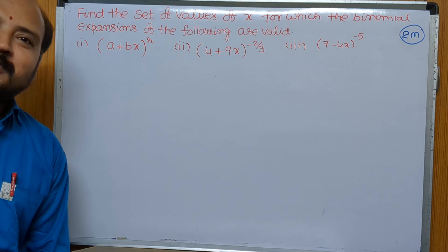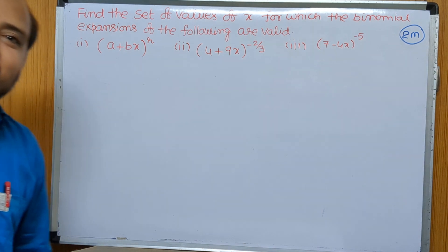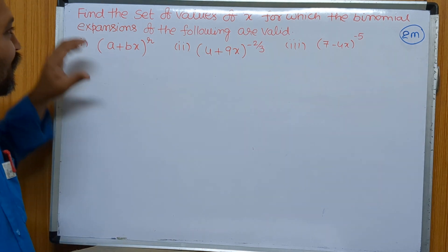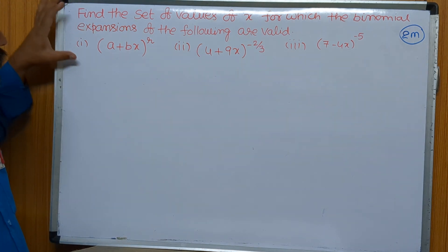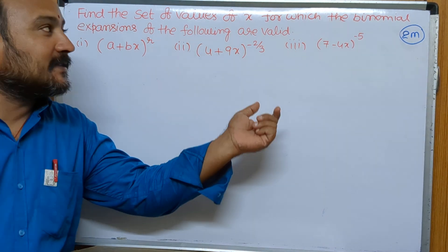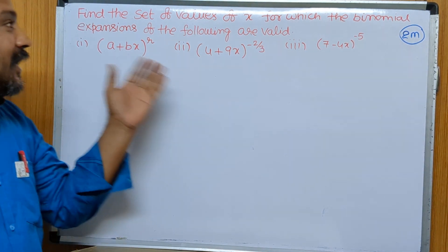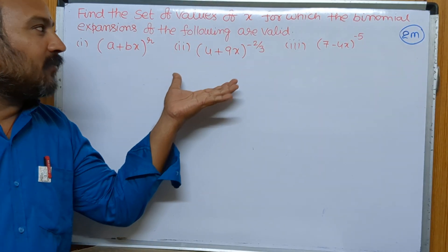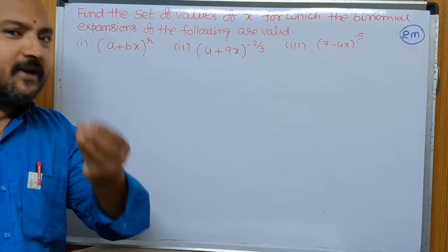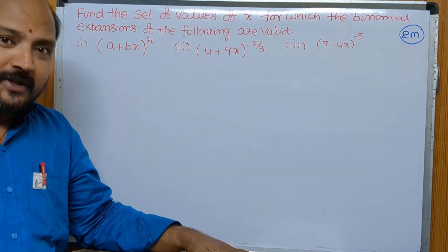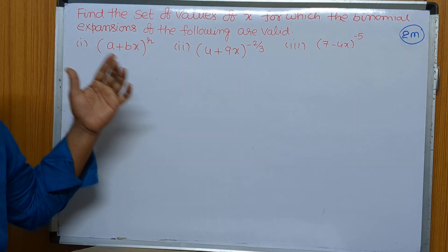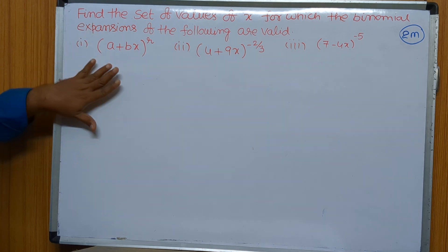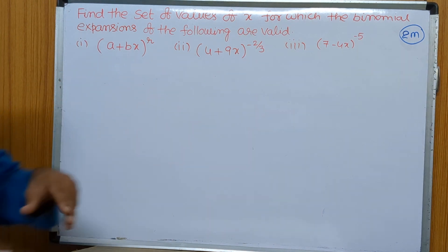Hi dear students, welcome to our channel Maths is Paninda. In this video, in binomial theorem, two marks question — find the set of values of x for which the binomial expansions of the following are valid. For this type of question we may expect two marks in the binomial theorem. So how to solve these type of problems? First I will explain three questions one by one.